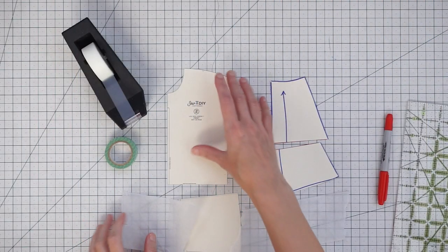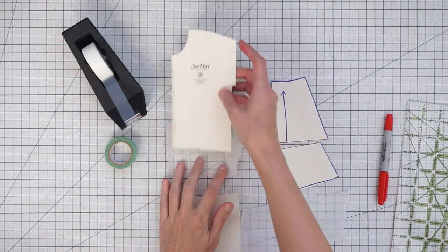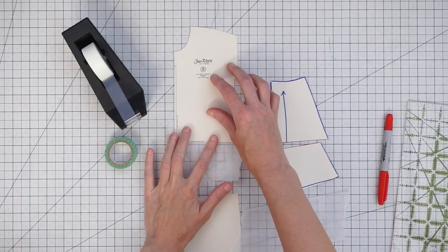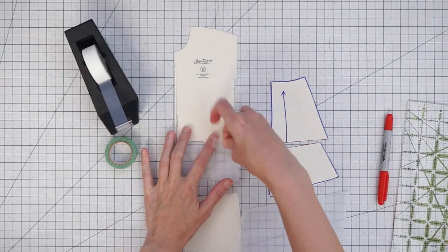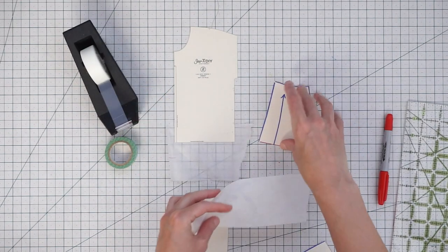Now to lengthen your pattern you're going to want to take a piece of scratch paper and put it underneath the pattern and then you tape your pattern in place. And we'll do the same with this skirt pattern.